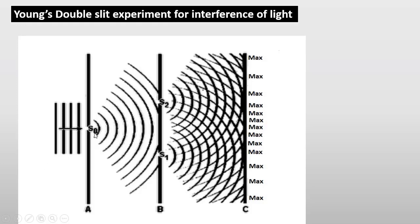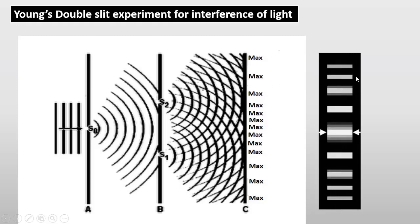In this experiment, a plane wavefront passes through slit S-naught, then through slits S-1 and S-2, dividing it into two waves. We assign a monochromatic light of single wavelength. When the two waves interfere and fall on the screen, we observe bright regions called bright fringes and dark regions called dark fringes. Bright fringes are called maxima and dark fringes are called minima — also called bright bands and dark bands.